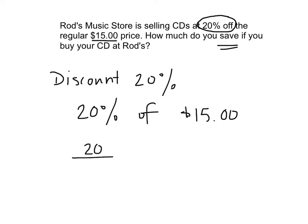So what would that be as a fraction? 20 over 100. Good, because percent's always out of 100. So that's going to be equal to an amount, which we don't know, out of 15. And we'll put X here, because that's the unknown.